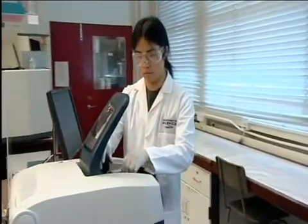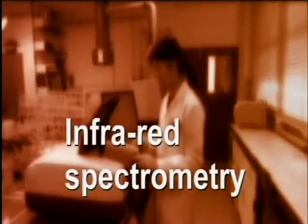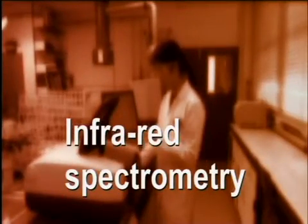Infrared spectrometry helps chemists to identify the functional groups present in a compound. It can therefore help in finding the structure of a compound.